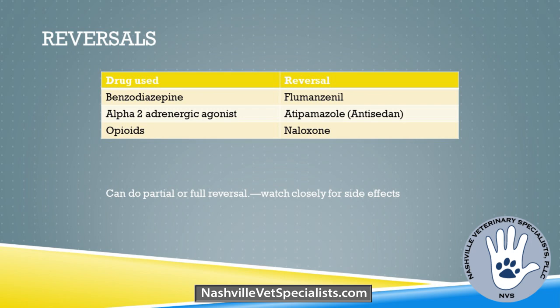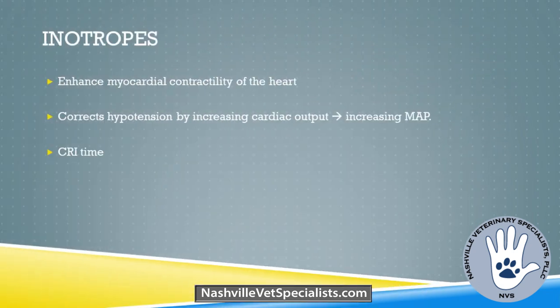Reversals: most people don't like to use them, but you can do a partial or full reversal of your pre-med. If they're on fentanyl-lidocaine and blood pressure is critically low, we've taken them off of it to help the patient make it off the table. Inotropes enhance myocardial contractility by increasing cardiac output — ideally increasing the amount of blood ejected per beat. The three main ones we use are dobutamine, dopamine, and norepinephrine.